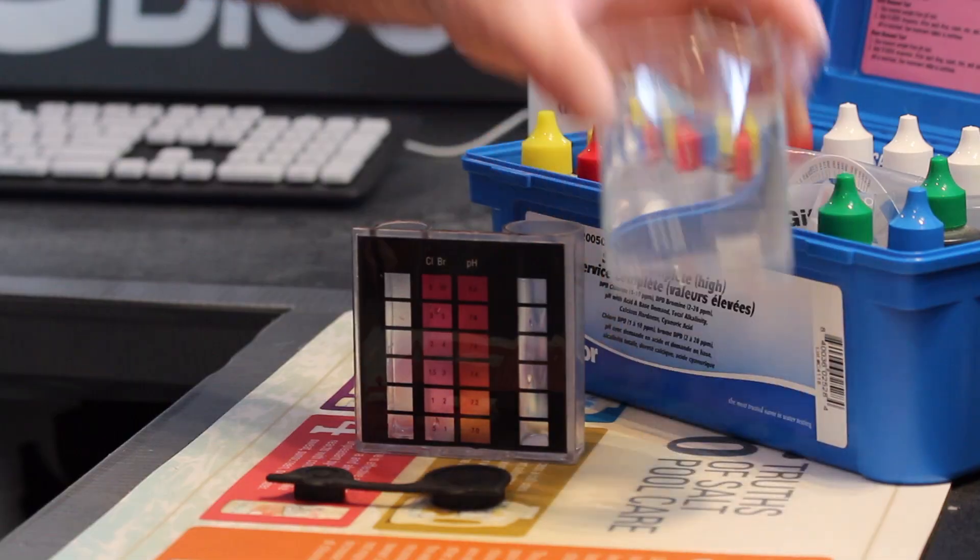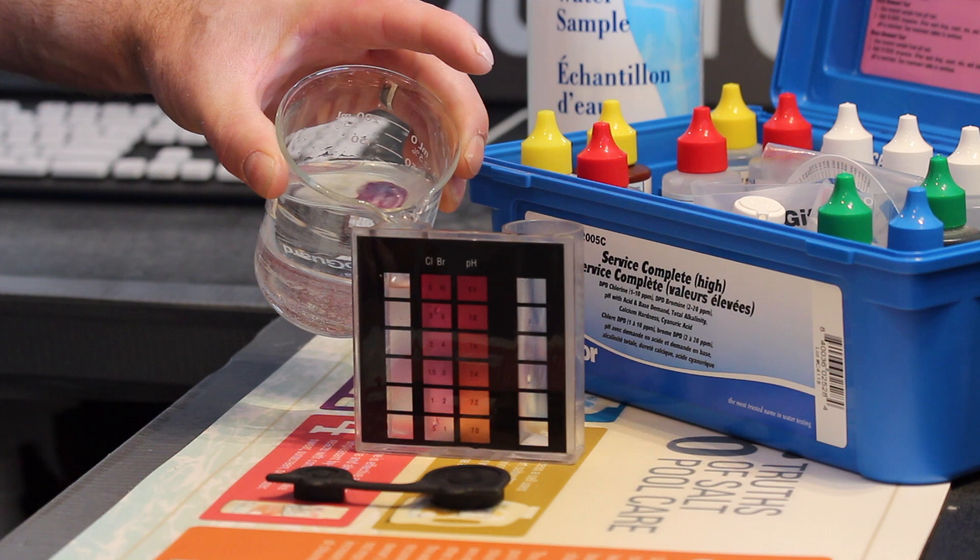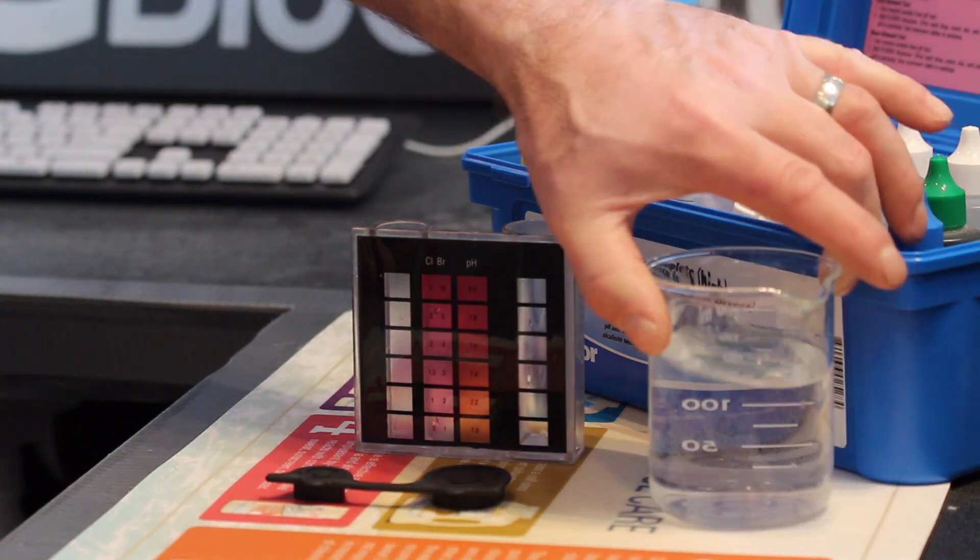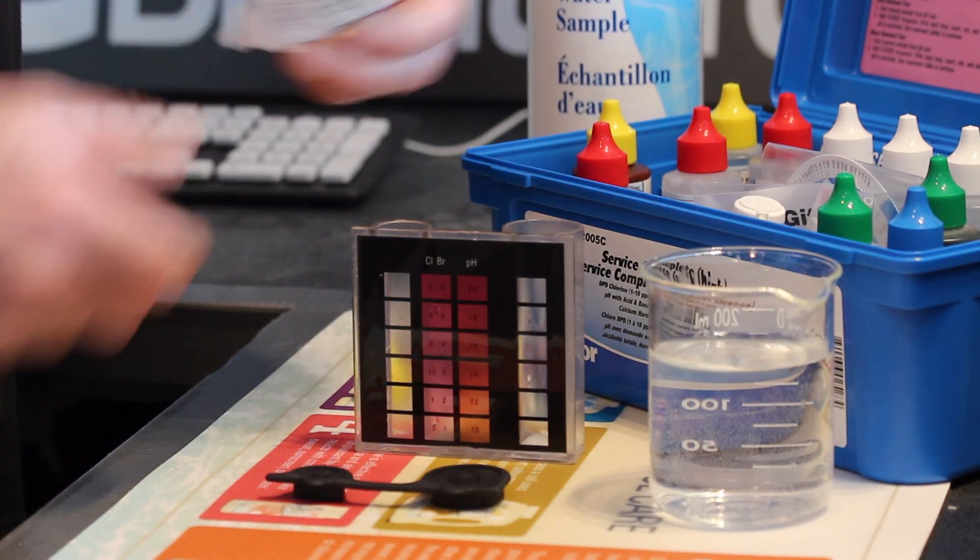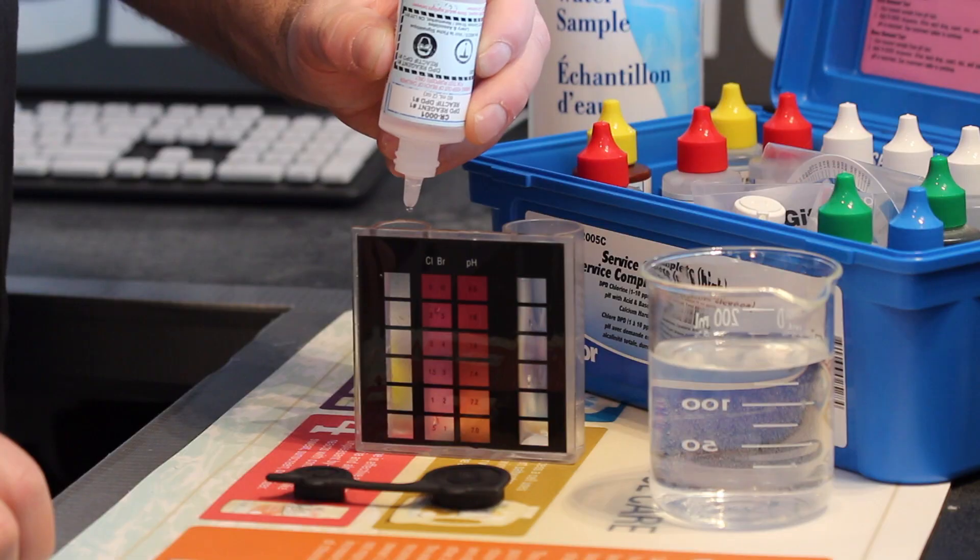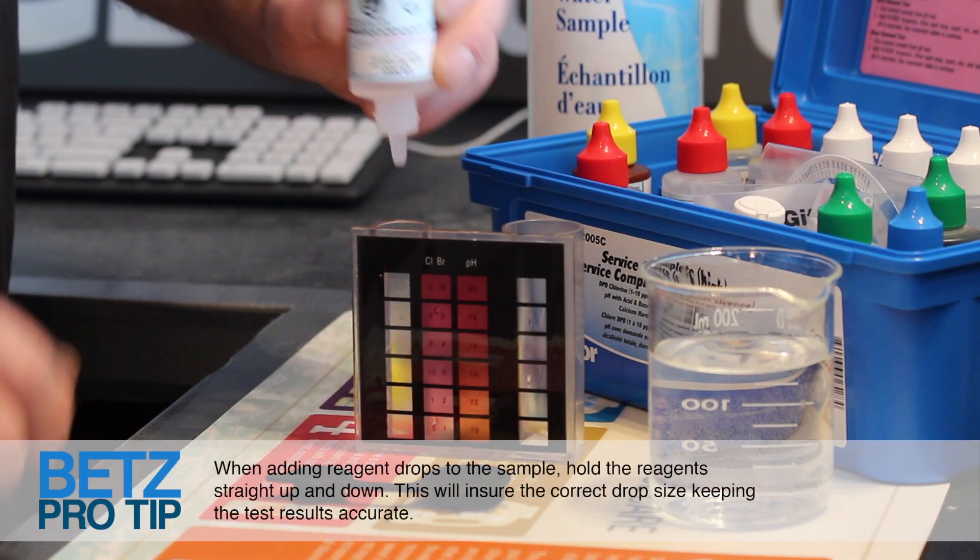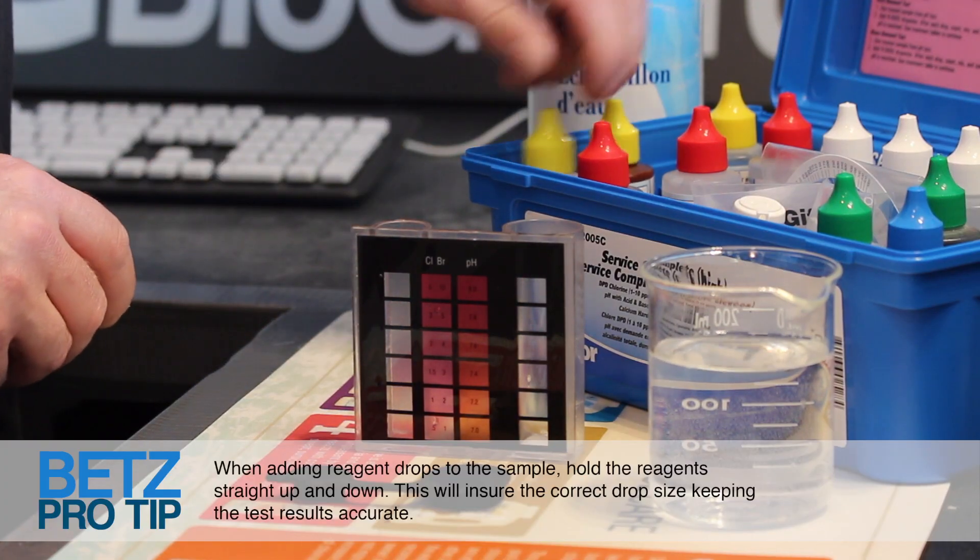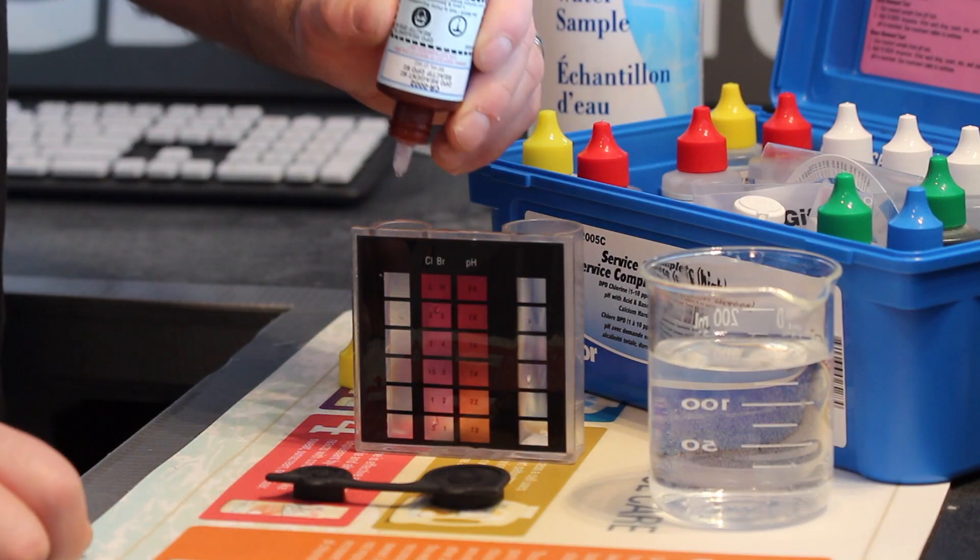Let's start by testing for free chlorine. Fill the small comparator tube to the 9ml mark. Now add 5 drops of reagent number 1 and 5 drops of reagent number 2.